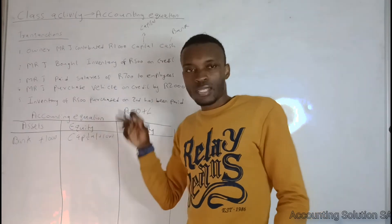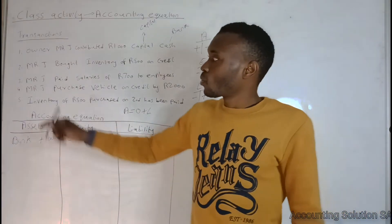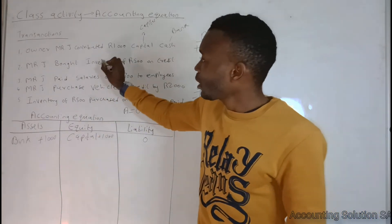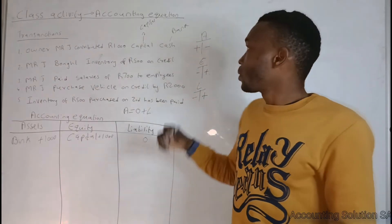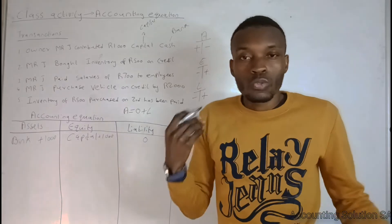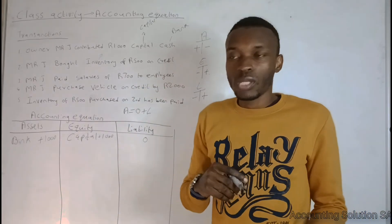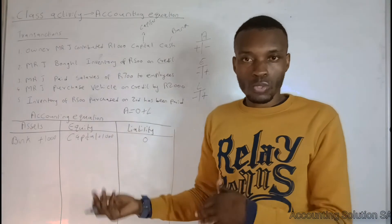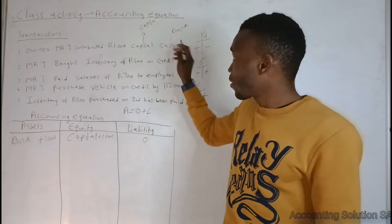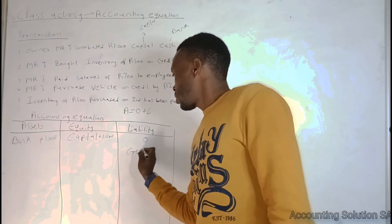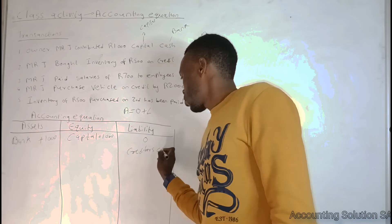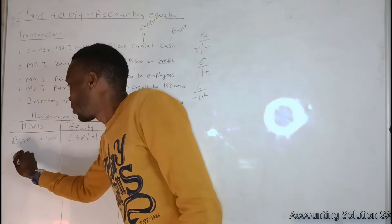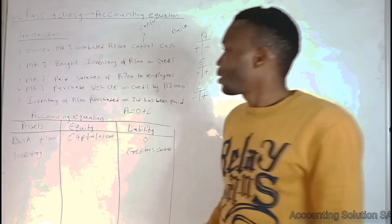Transaction 2: Mr. J bought inventory of R500 on credit. We identify two components: number one, inventory — inventory is an asset. Number two, creditors control — because we purchased on credit, meaning we still owe someone, which is a liability. So we write inventory as an asset and creditors control as a liability, with an amount of R500.